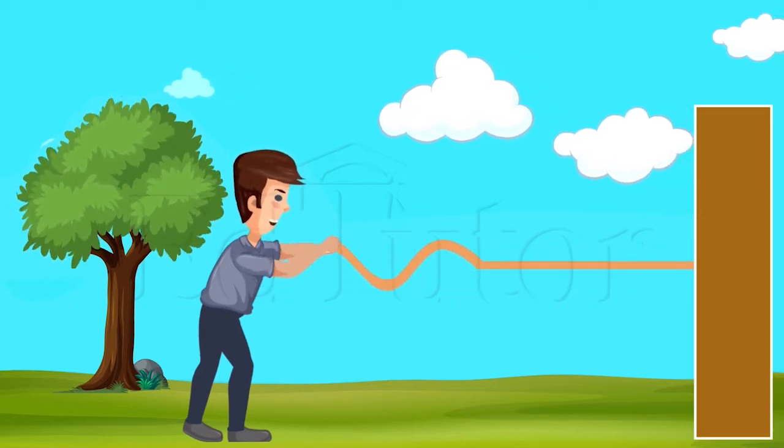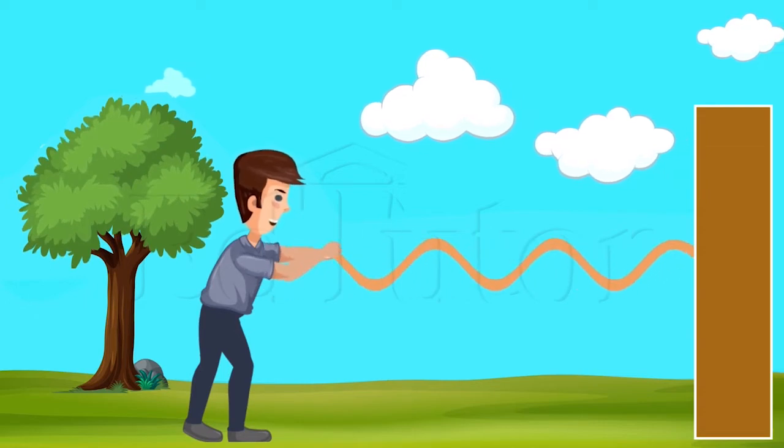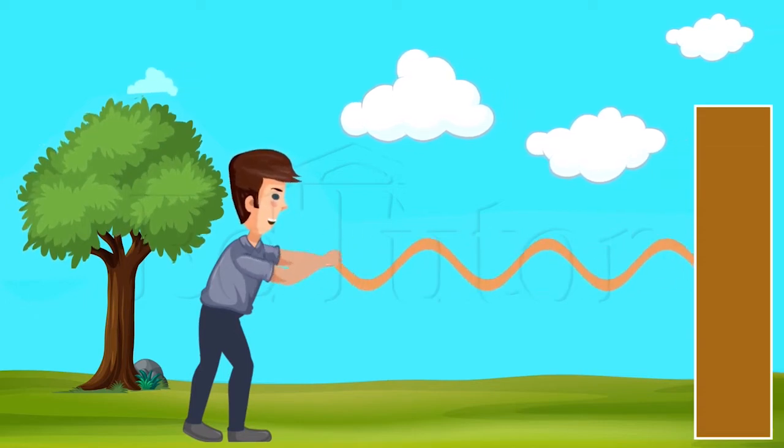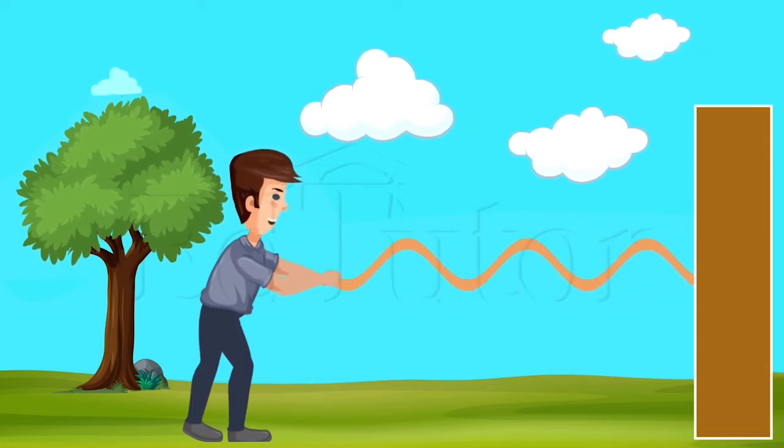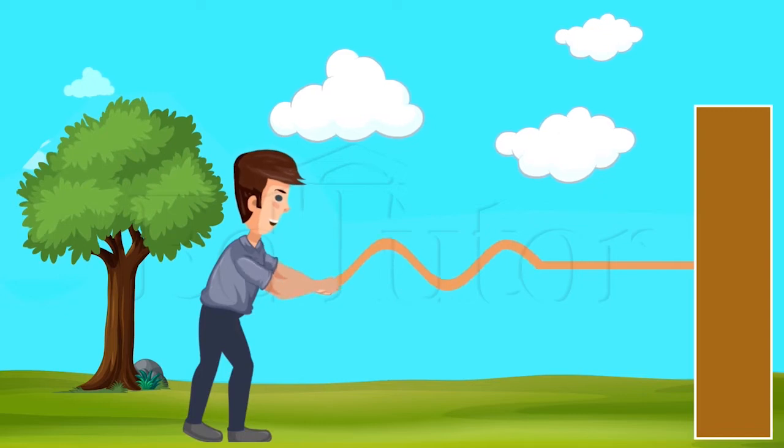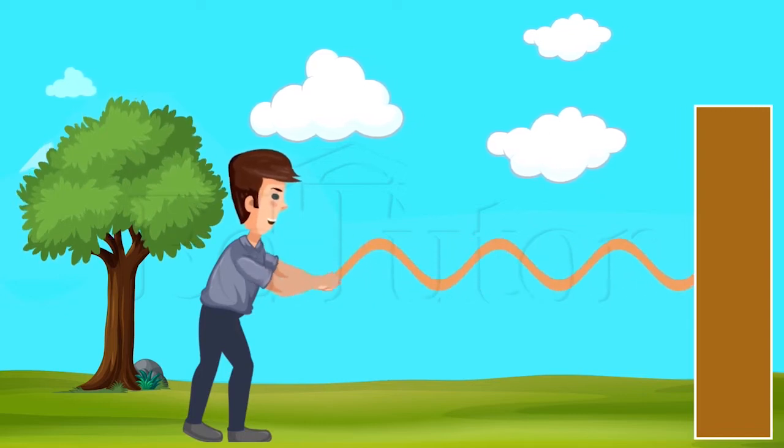Due to which a set of waves can be seen traveling along the string. This happens because the force from the hand propagates the particles in the string and sets them in motion. The particles transfer that energy to the adjacent particles due to being tightly packed together.